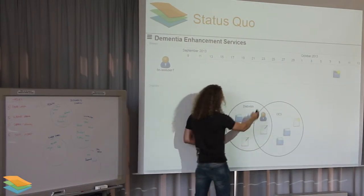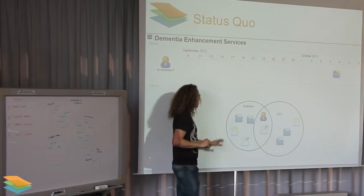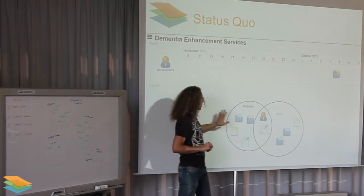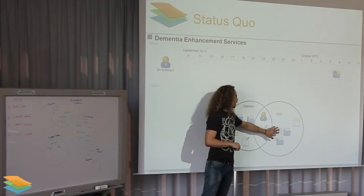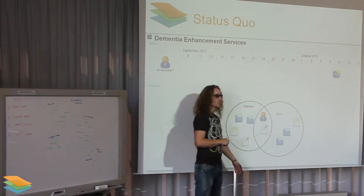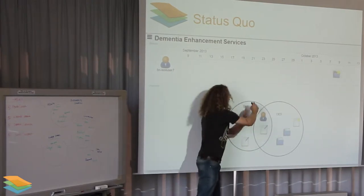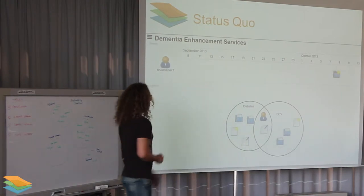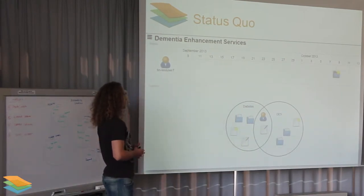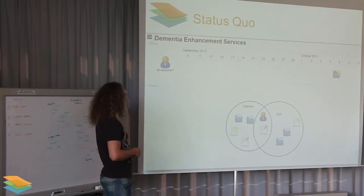You can arrange learning experiences into different circles, categorizing them. For example, you could have informal learning experiences related to diabetes and experiences related to dementia enhancement services. In the overlap area, you can arrange bits and pieces to relate them to each other and organize them.